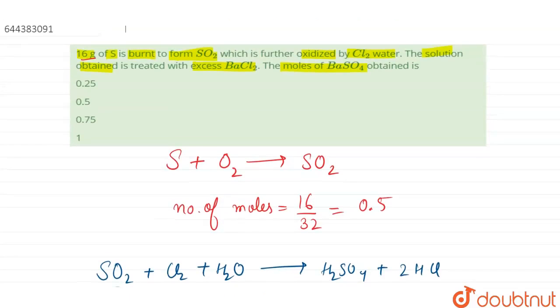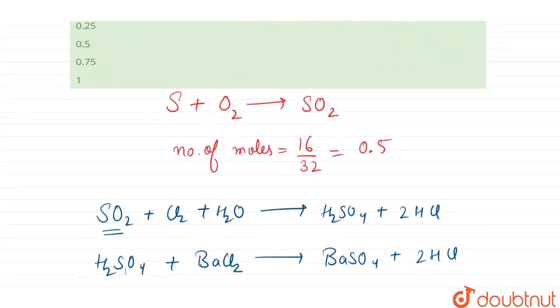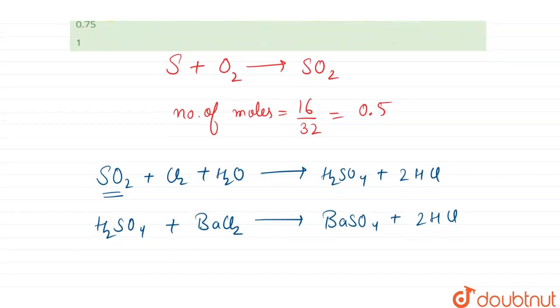Again, I am explaining it. Here we have calculated the number of moles of sulfur, that is 0.5. So 0.5 moles of sulfur will give 0.5 moles of sulfur dioxide. This 0.5 moles of sulfur dioxide is consumed in this reaction and forms 0.5 moles of H2SO4.